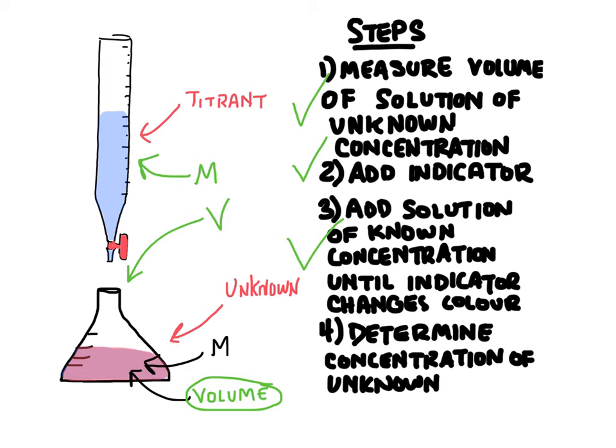When we've reached the equivalence point, we can use these three known pieces of information. That is the concentration of the titrant, the volume added, and the volume of the unknown to solve for our only unknown in this case, which is the concentration of the unknown solution.